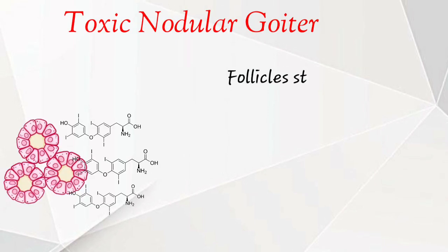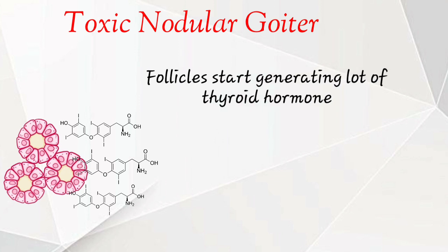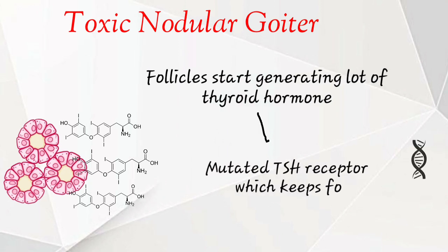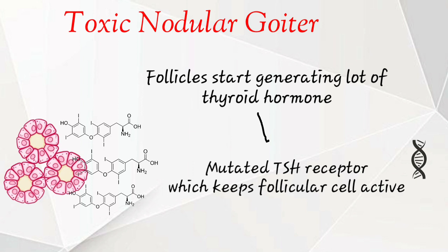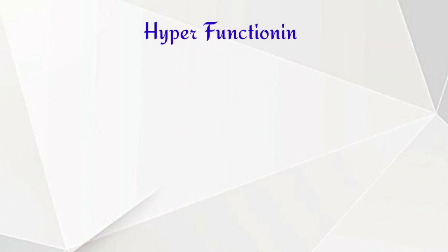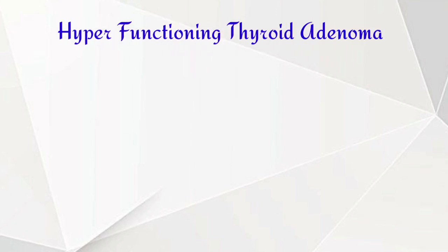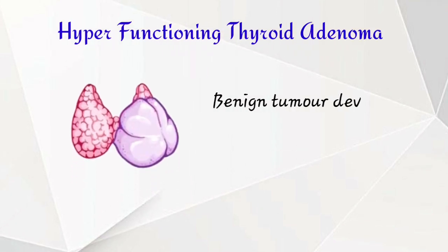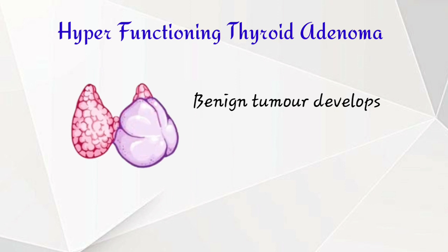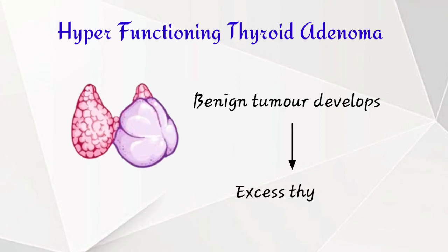Next cause is toxic nodular goiter. It is due to follicles starting to generate a lot of thyroid hormone because of mutated TSH receptors. Follicle cells stay active, resulting in excess thyroid hormone production.